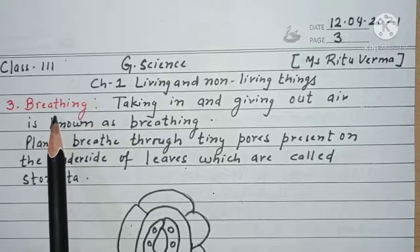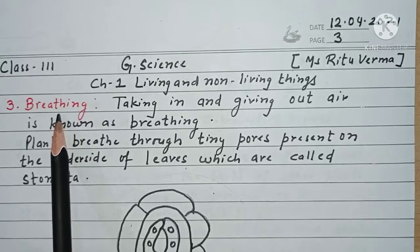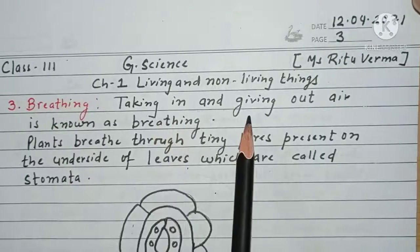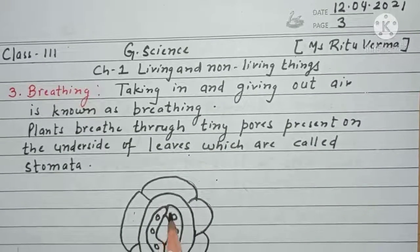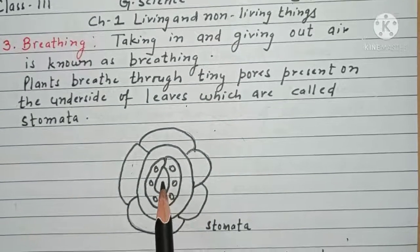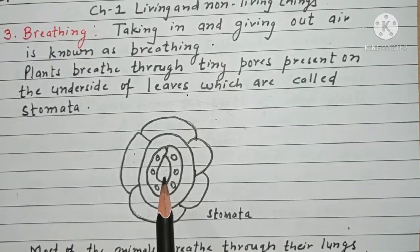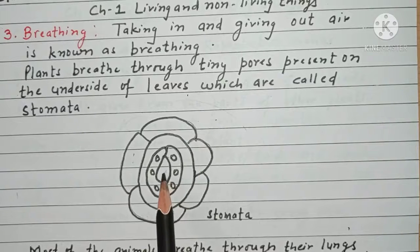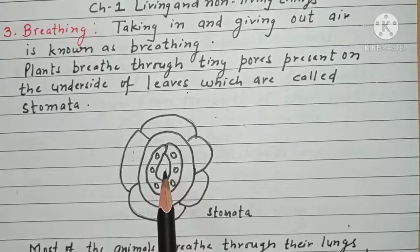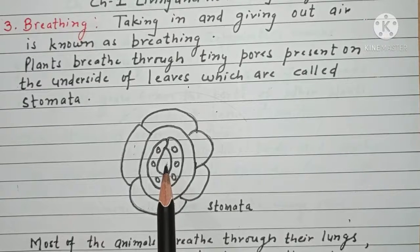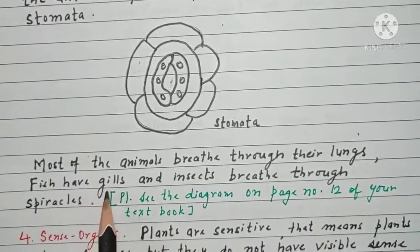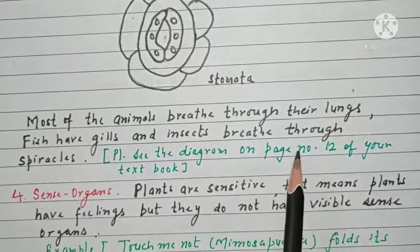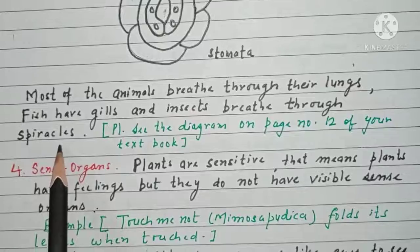The third point is regarding breathing — how plants and animals differ in breathing. Breathing means taking in and giving out air. Plants breathe through tiny pores present on the underside of leaves. These tiny pores are known as stomata. This is the structure of stomata, and these are very tiny pores through which plants breathe. Most animals breathe through their lungs. Fish have gills, and insects breathe through openings known as spiracles.